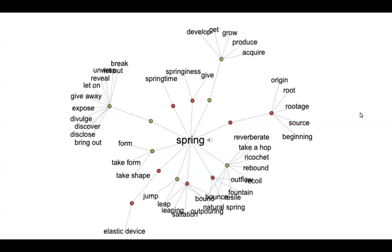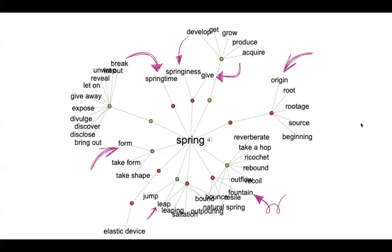Have you ever used a visual thesaurus? They show word relationships based on dictionary definitions. Here's an example using the word spring, and I can see that the word is related to other words like springiness or springtime or give, but that it's also related to form and leap and fountain and origin.